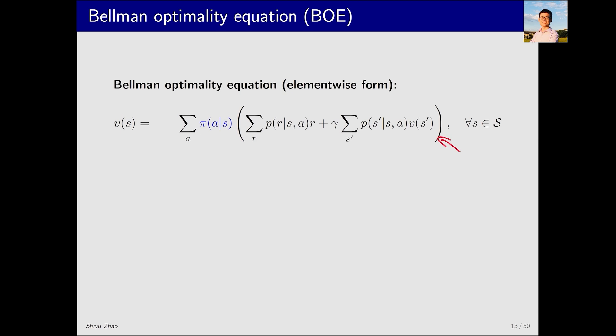It's essentially the Bellman equation, which is defined for a given policy π. However, there's a slight modification, the addition of max before π, making π no longer given. This introduces an optimization problem within the equation. We need to first solve π and then substitute it back into the equation.